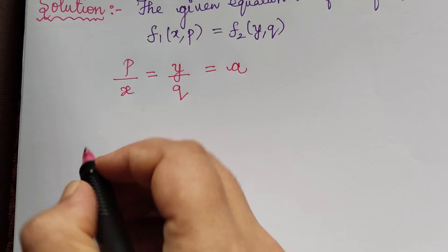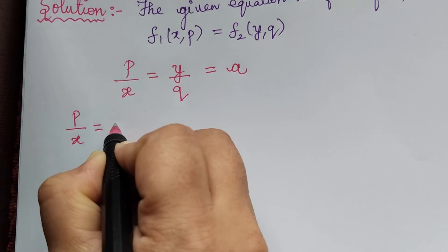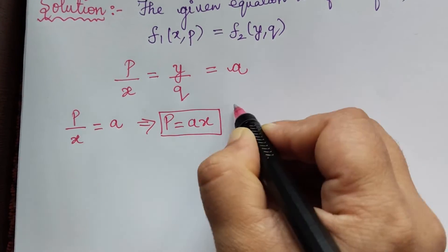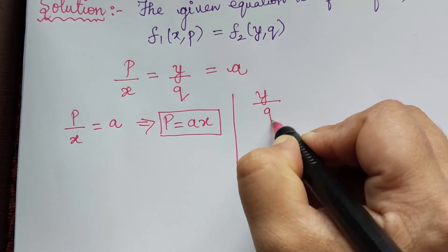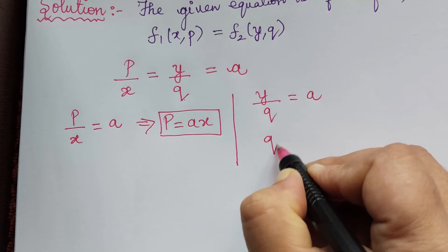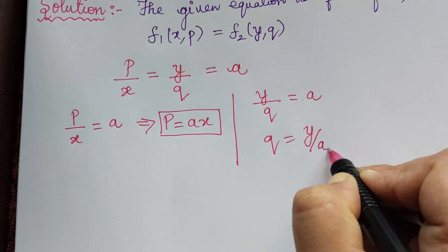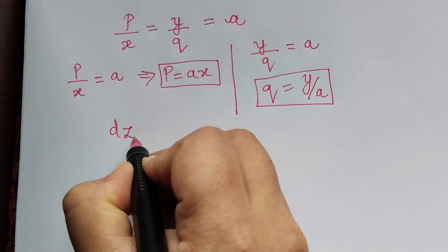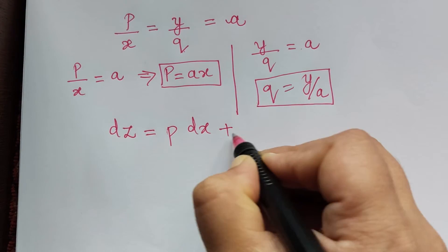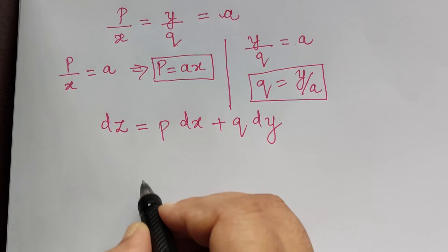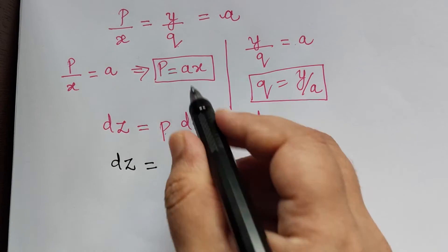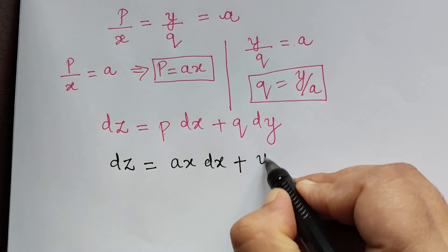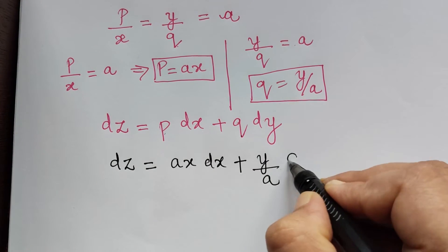From p by x equals a, we obtain p equal to ax. From y by q equals a, we obtain q equal to y divided by a. Substituting into dz equals p dx plus q dy, we get dz equals ax dx plus y by a dy.